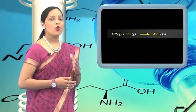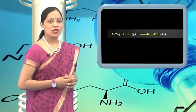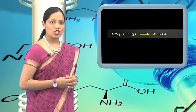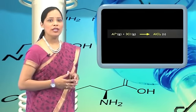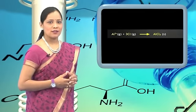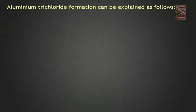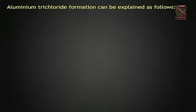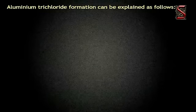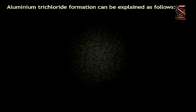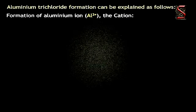Let us now look into the formation of aluminium chloride. Aluminium trichloride (AlCl₃) formation can be explained as follows. Aluminium (Al, EC: 2,8,3) loses three electrons to form Al³⁺ (EC: 2,8), and three chlorine atoms (each EC: 2,8,7) each gain one electron to form Cl⁻ (EC: 2,8,8). Each aluminium atom loses 3 electrons and 3 chlorine atoms gain one electron each, forming Al³⁺ and 3 Cl⁻. The compound AlCl₃ is formed from its component ions by the electrostatic forces of attraction.